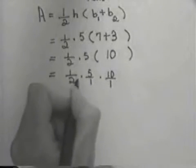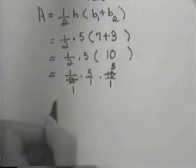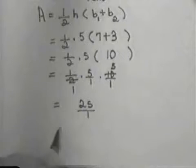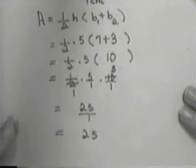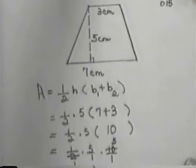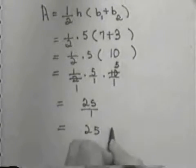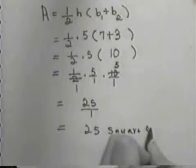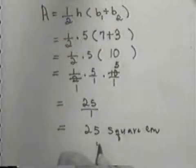If I do it all at once, I can go ahead and cancel over here 2 into 2 one time, 2 into 10 five times, and so I'll be left with 25 over 1, or just 25. And if we go back and look up here in our original picture, we were working with centimeters, and we're finding area, so I want to make sure on my answer I put square centimeters.